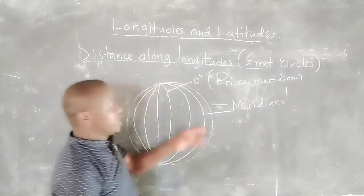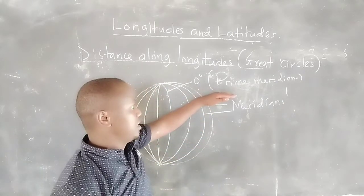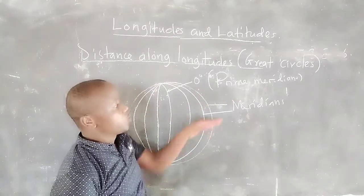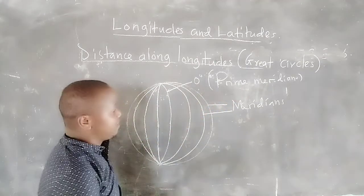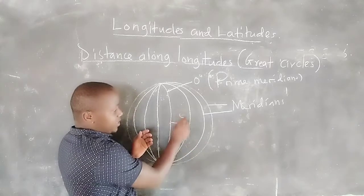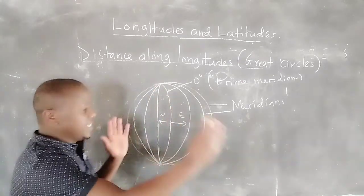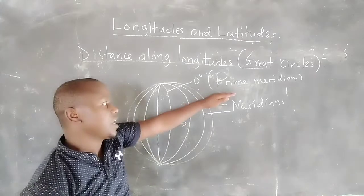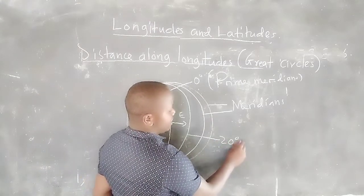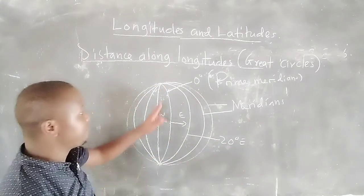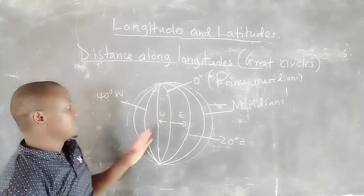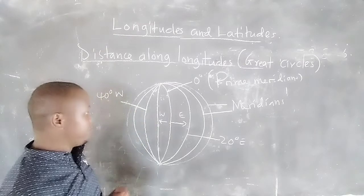We have a special meridian which is zero degrees. All other meridians are named with reference to the prime meridian, also called the Greenwich meridian. From the prime meridian, we can have other meridians either to the east or to the west — for example, 20 degrees east or 40 degrees west of the Greenwich meridian.